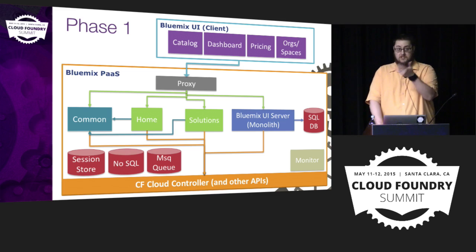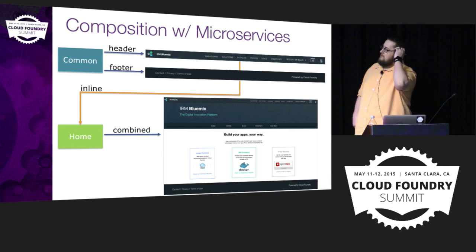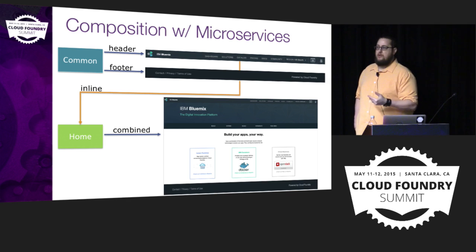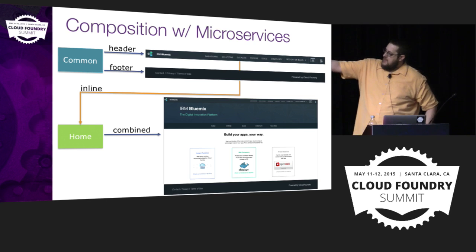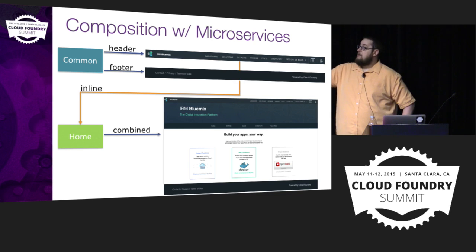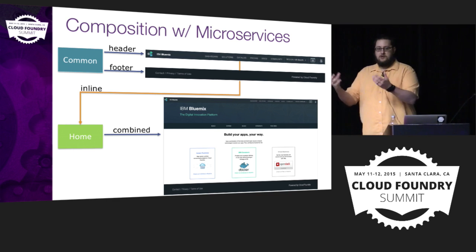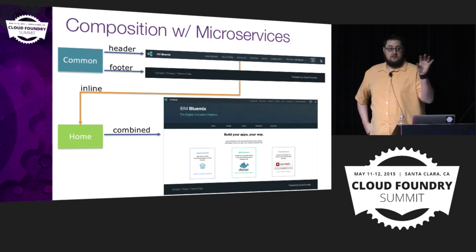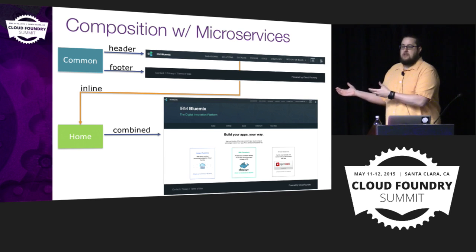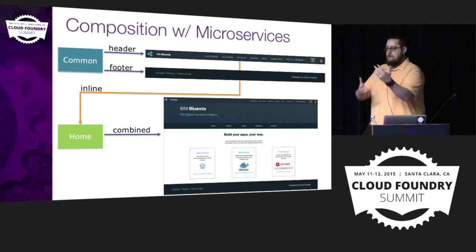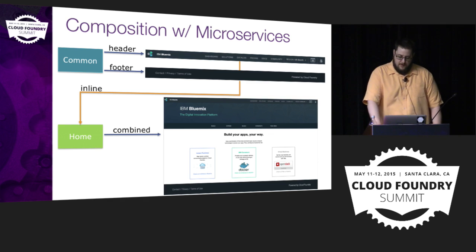So I showed the slide and gave a demo of this architecture. Our common microservice is one interesting thing we're doing to bring consistency to the whole thing. All of our microservices call this common microservice to get an HTML snippet to insert as header and footer in both places. This allows our microservices to have a consistent look and feel, and if other teams build on another stack, as long as they're using HTML, they can call our common microservice and share the same header and footer.